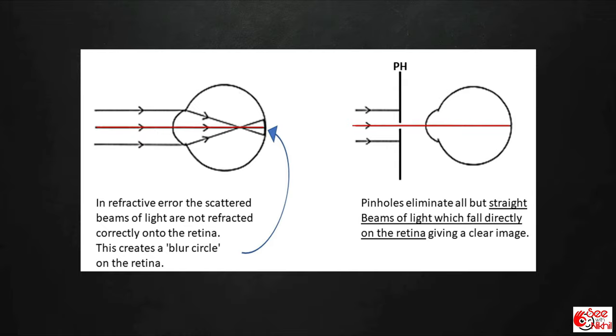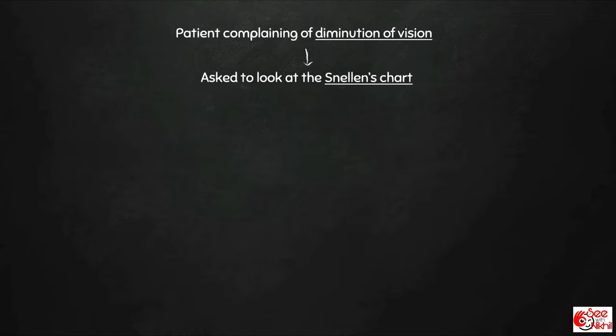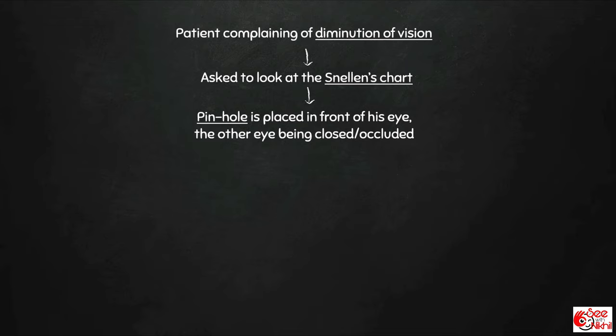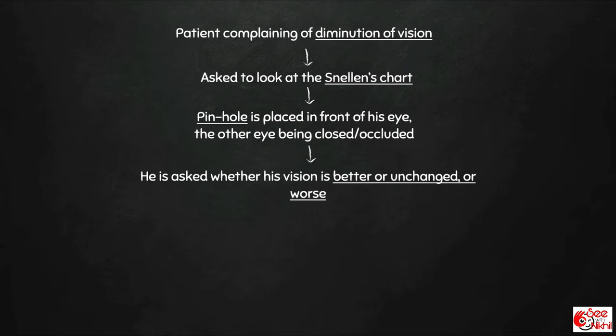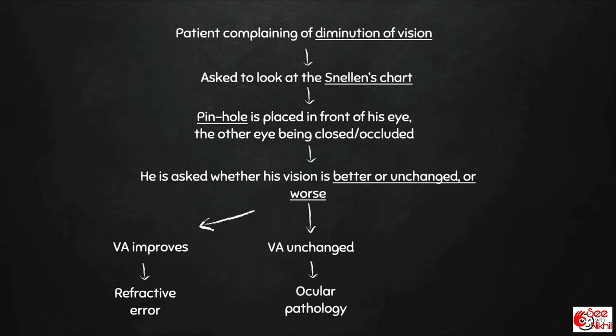The pinhole can neutralize refractive errors of up to 4 diopters. When a patient complains of diminution of vision, he is asked to look at the Snellen chart. The pinhole is placed in front of one eye and the other eye is closed. He is asked whether his vision is better, unchanged, or worse. If the vision improves, the patient has a refractive error. If the vision is unchanged, there is some ocular pathology. A decrease in vision indicates macular pathology.